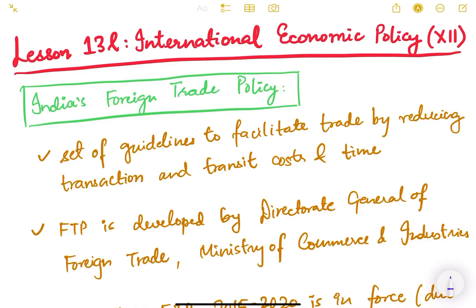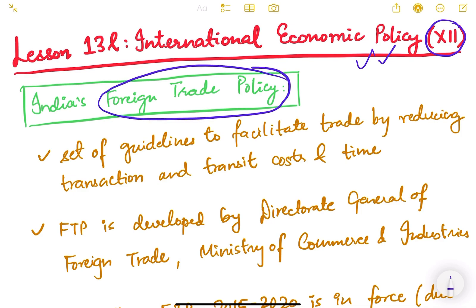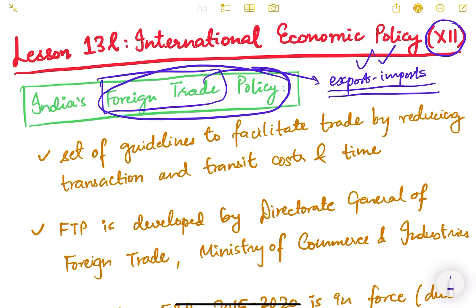Hello friends, let us continue with international economic policy. This is the 12th video of this lesson, and in this video we are going to study about foreign trade policy. Foreign trade simply means exports and imports — whatever India is selling to other countries and whatever India is buying from other countries. Every country has a policy to regulate and control its exports and imports.